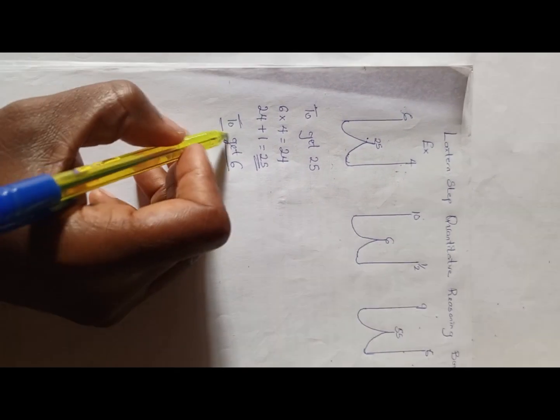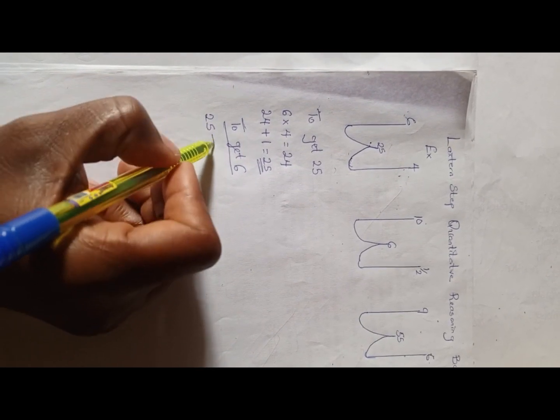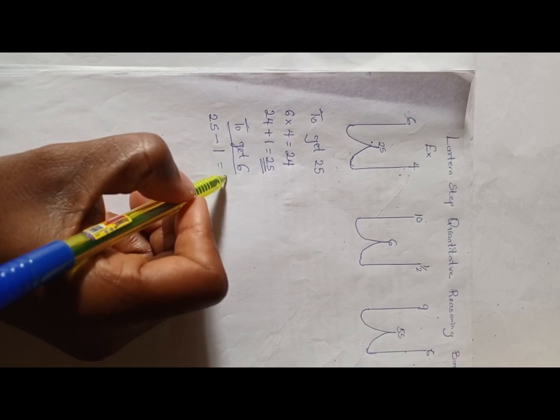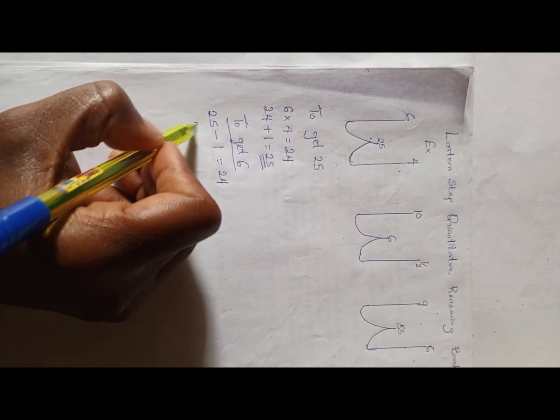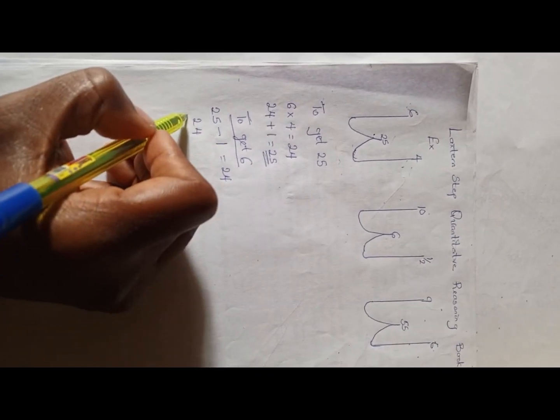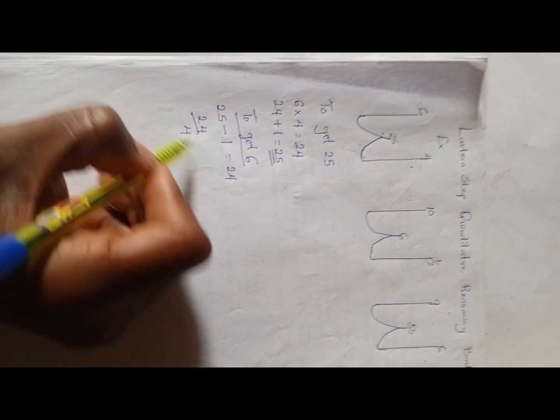To get 6, we're going to have 25 minus the imaginary 1, which is 24. And 24 divided by 4 is 6.